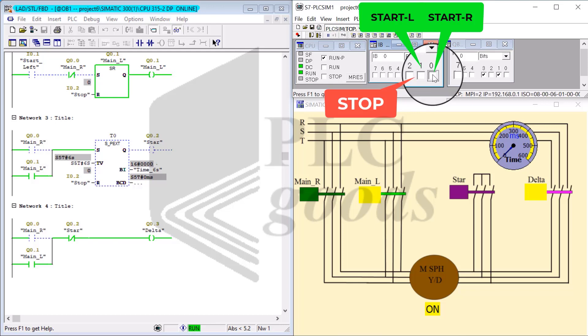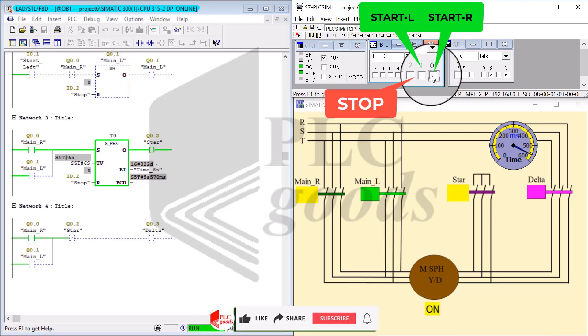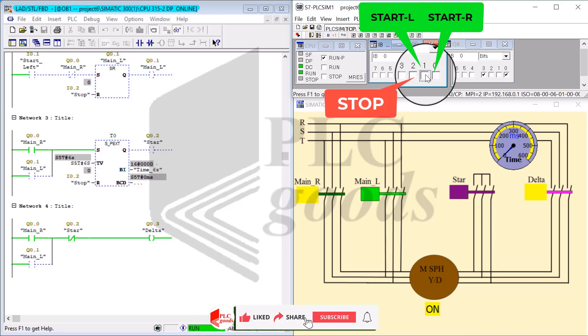Notice that while this is happening, I cannot change the direction. I have to stop it again, and this time I turn it on by clicking on start R, but notice again I cannot tap on start left and change the direction.